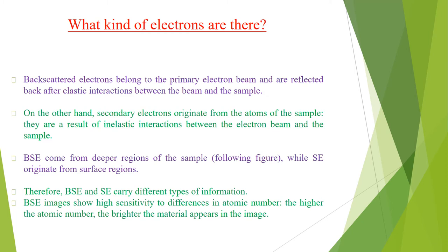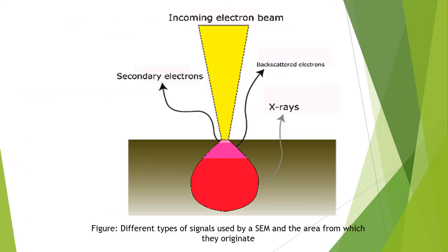Backscattered electrons come from deeper regions of the sample, while secondary electrons originate from surface regions. Therefore, backscattered electrons and secondary electrons carry different types of information. Backscattered electron images show high sensitivity to differences in atomic number — the higher the atomic number, the brighter the material appears in the image. A figure shows different types of signals used by the scanning electron microscope and the areas from which they originate.